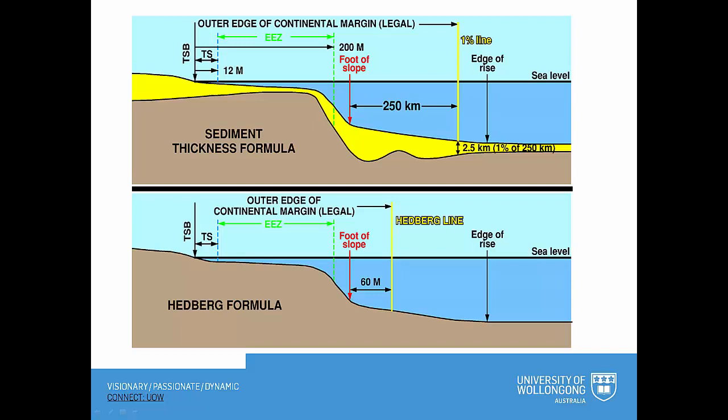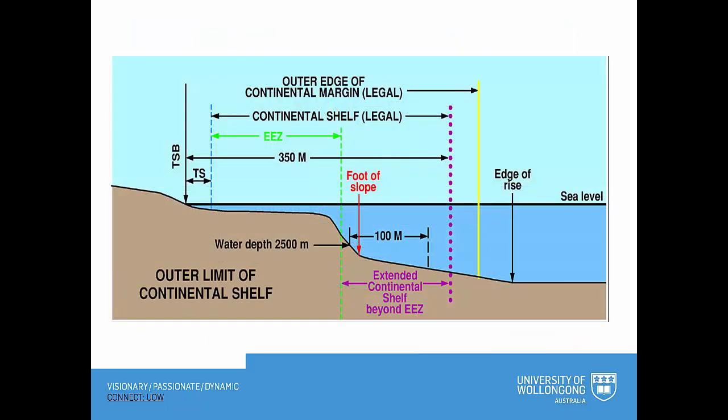It's open to a state to pick whichever of these two formulae gives it the best result and the largest continental shelf, and indeed they can use a combination of the two depending on the configuration of the seabed and the availability of sediment thickness. There are also overall constraints on the operation of both of these rules. There are maximum limits of either 350 nautical miles or 100 nautical miles beyond the 2500 metre isobath, and you can use whichever of the two again gives you the larger result.